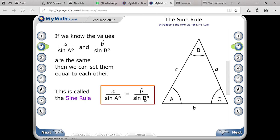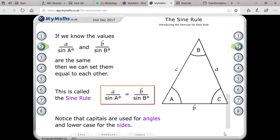Firstly, you are equating a and b: a upon sine A equals b upon sine B. Now you can also do that with respect to b and c. Always remember that the capitals are used for the angles and the lowercase are used for the sides.